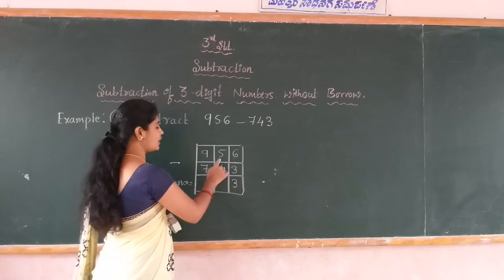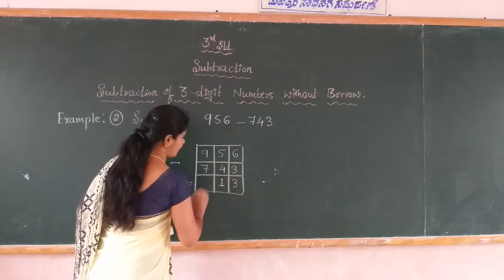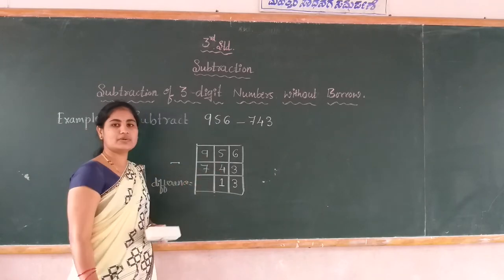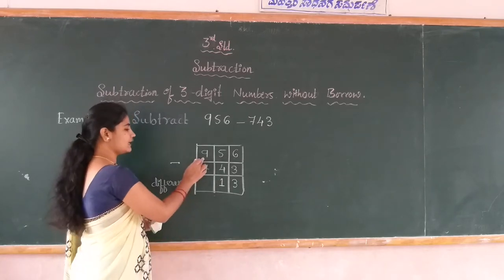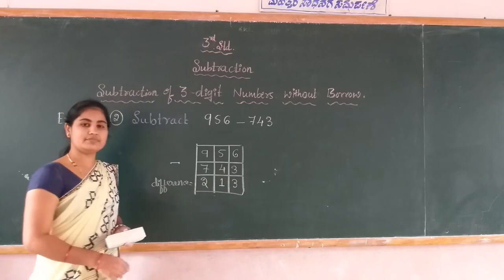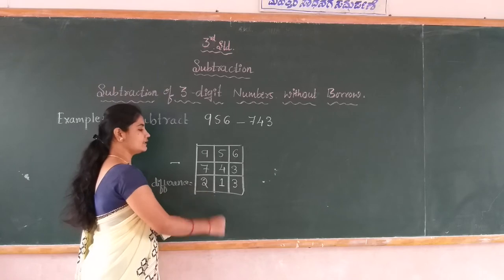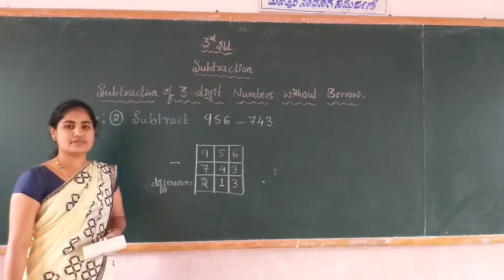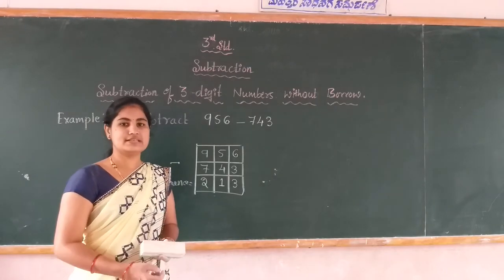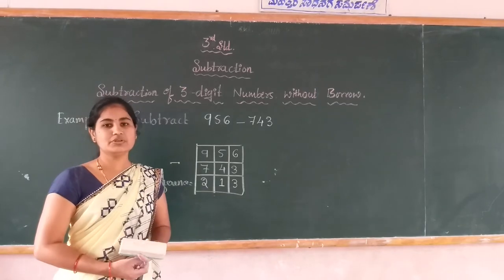Next come to the tens place: 5 minus 4 is 1. Then to the hundreds place: 9 minus 7 is 2. The difference becomes 213. This is the method for subtraction of three digit numbers without borrow.